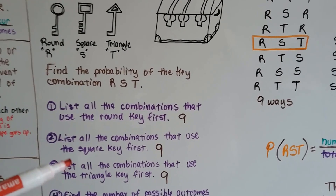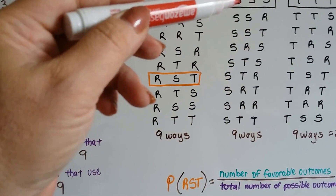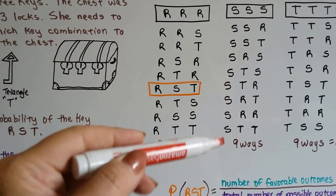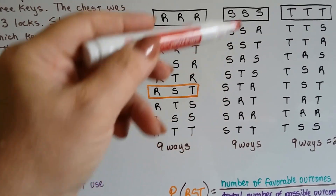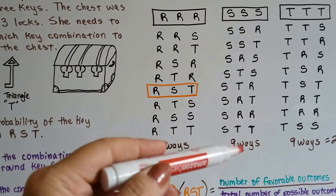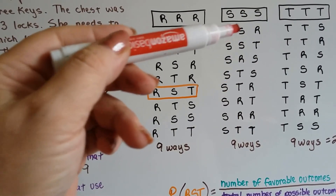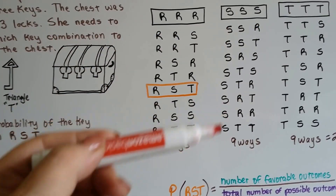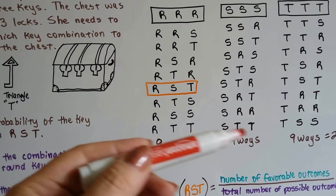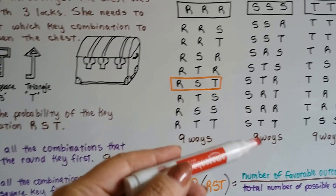Then we list all the combinations that use the square key first. We could do square, square, round — or square, round, triangle — or square, triangle, triangle. We find there are nine different combinations with the square key first.